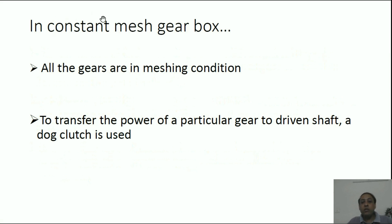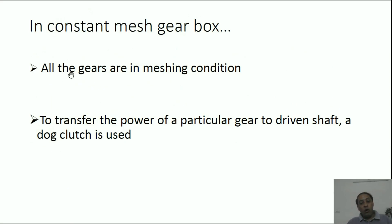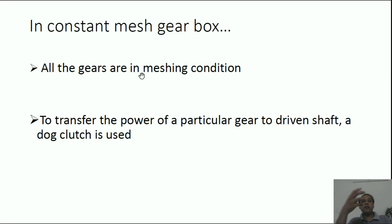Now in a constant mesh gearbox, all the gears — first, second, third, fourth, whatever the number of gears — are always in meshing condition, whether a small gear is running a bigger gear or a bigger gear is running a smaller gear. All the gears are always in meshing condition.